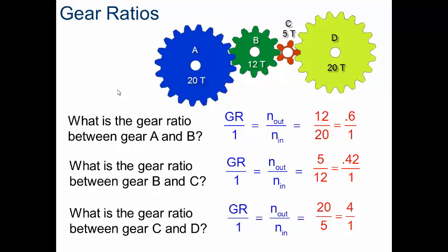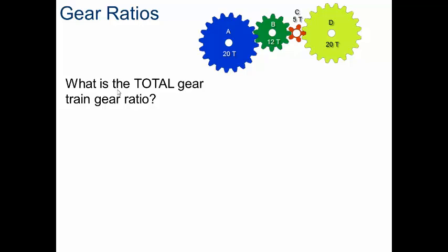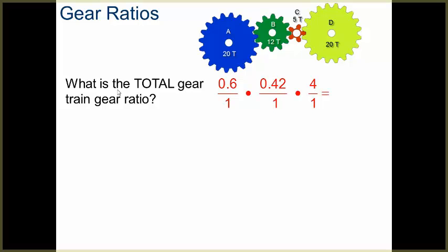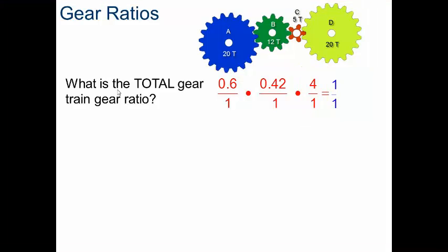But what is the total gear ratio for this entire system? To find the total gear ratio for the entire system, you simply multiply each individual gear ratio to each other. The 0.6 came from us mating gear A and B together. The 0.42 came from us mating gear B and C together. The gear ratio of 4 came from mating C and D together. So what I do is just multiply all those together, and this actually comes out to be a gear ratio of 1 to 1.